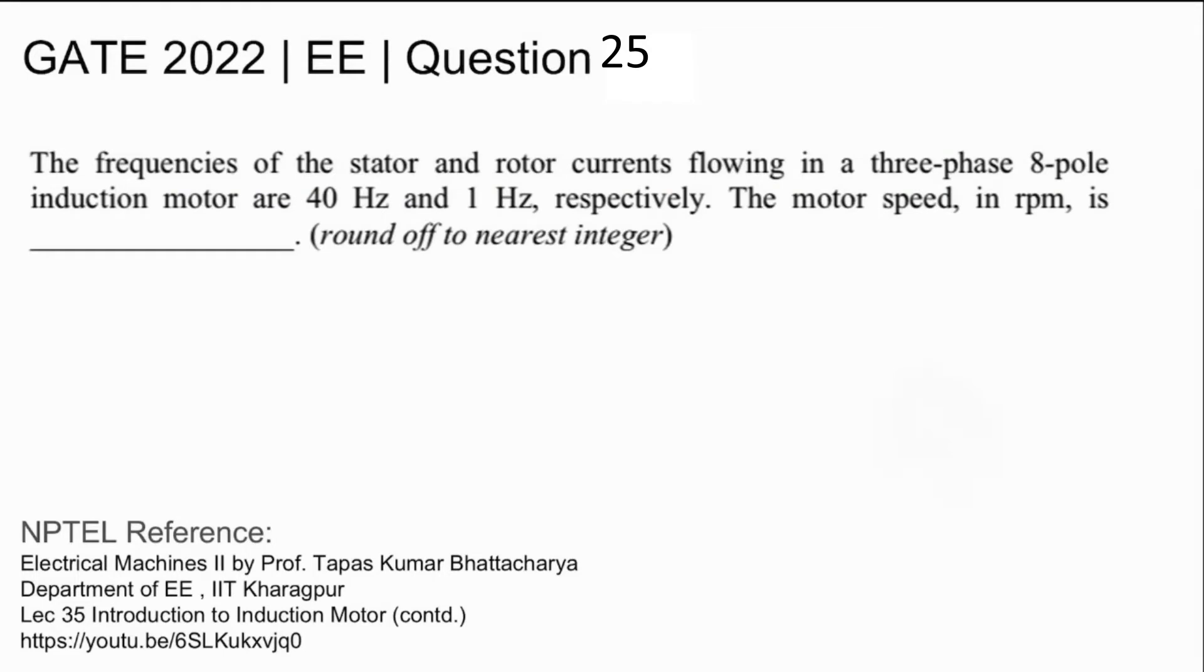This is Gate 2022 Electrical question number 35. The frequencies of the stator and rotor currents flowing in a three-phase, eight-pole induction motor are 40 Hz and 1 Hz respectively. The motor speed in rpm is being asked.